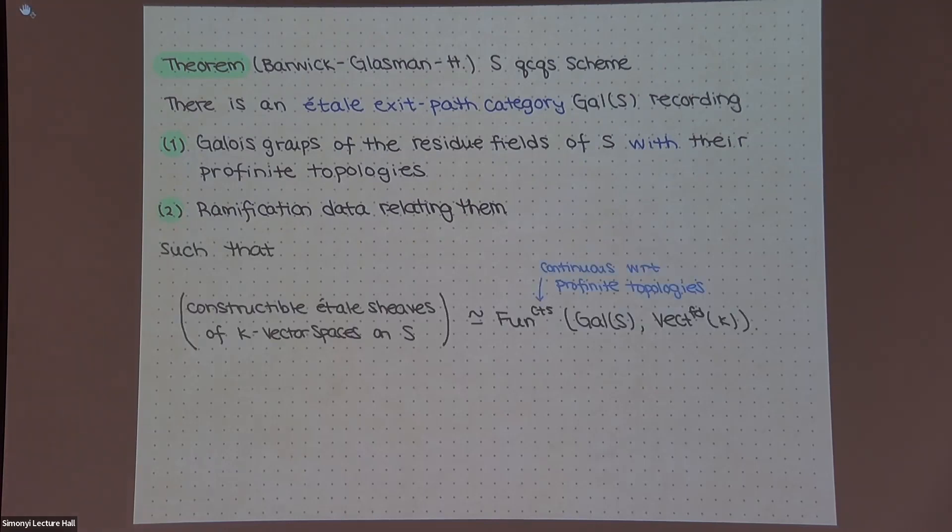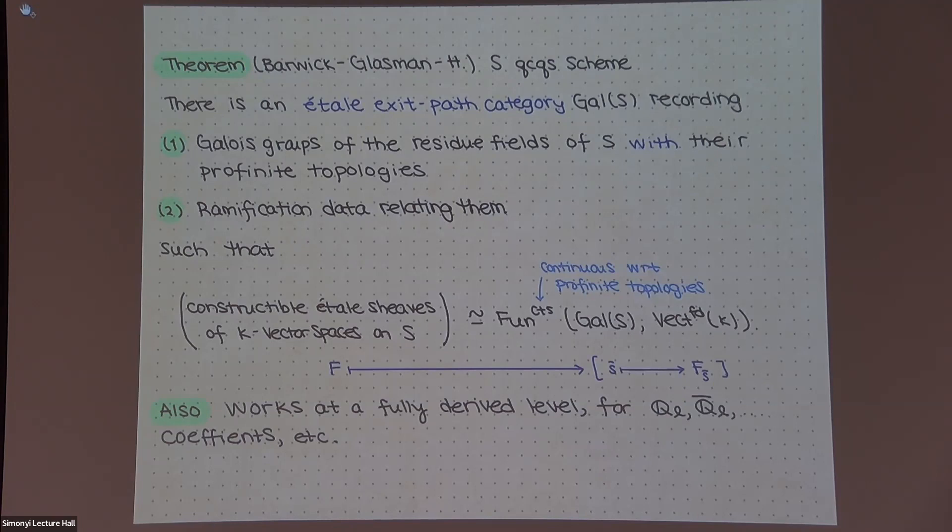And there's a classification theorem like this. And basically, what it says is one of these sheaves that's locally constant along some stratification, you can completely understand by basically understanding representations of the Galois groups of every point and how they glue together. So in some sense, it's somewhat combinatorial. And this also works, you know, at a fully derived level for people who like this. This works for l-adic sheaves. It works in much more generality than what I've stated here.